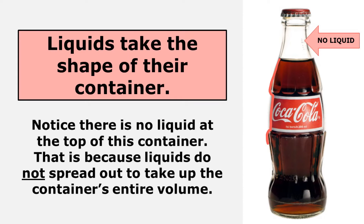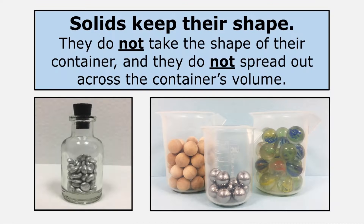Liquids take the shape of their container. But notice, there's no liquid at the top of this container. That's because liquids do not spread out to take up the container's entire volume. And solids keep their shape — they do not take the shape of their container, and they do not spread out across the container's volume.